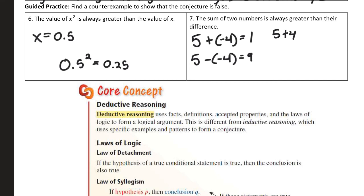Moving on to seven. The sum of two numbers is always greater than the difference. Well, you can add together two numbers that have opposite signs, like five and negative four. That gives me one. The difference between five and negative four, I do five minus negative four. That result is nine. That proves it false. The sum is less than the difference.